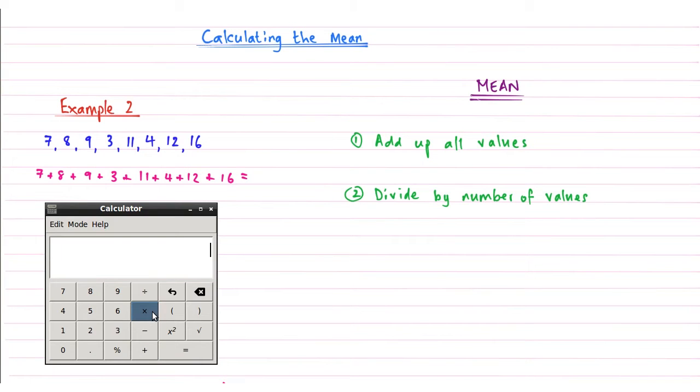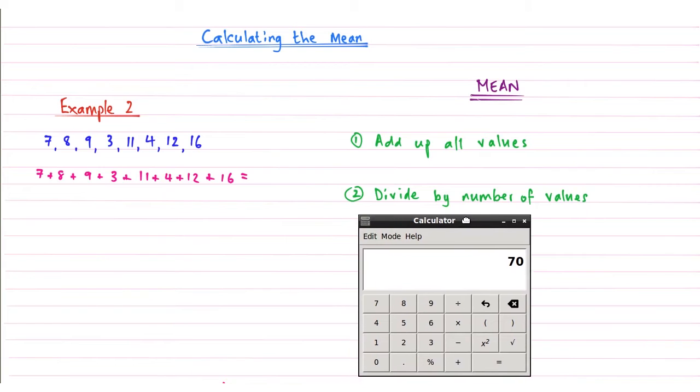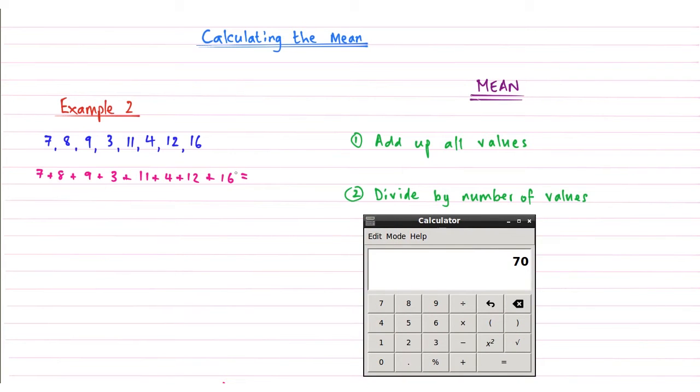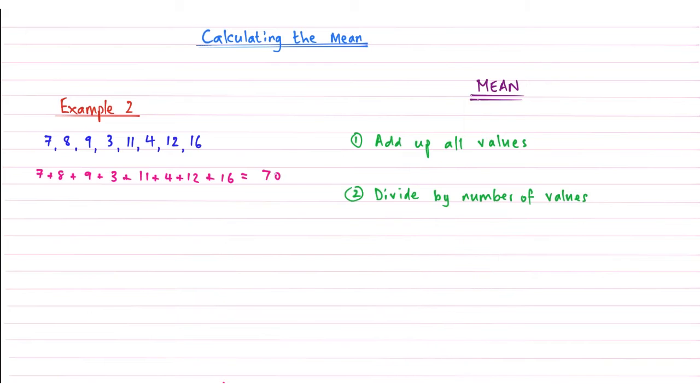So here is the calculator. We're just going to type these numbers in to work out what they all add up to. So 7 plus 8 plus 9 plus 3 plus 11 plus 4 plus 12 and we're adding 16 to that. Press equals. So that gives me the sum of all those values, and remember sum is just another word for total. So add up all the values gives me an answer of 70.